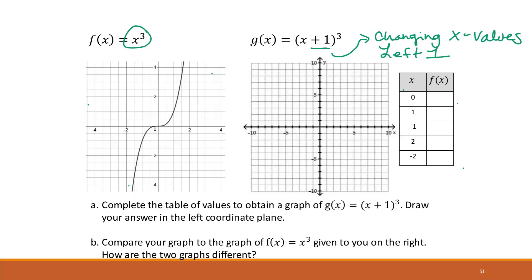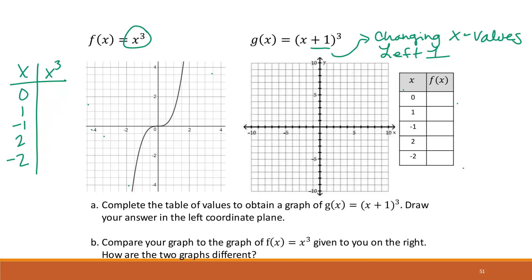So if we look at the points for the original parent function — the cubic function — we have (0,0), (1,1), (-1,-1), (2,8), and (-2,-8). I want to show you how to apply it to the x values, so I'll create a different table. If we want x and (x+1)³ as our y values, the y values from the original table stay the same: 0, 1, -1, 8, and -8. But I am making a change to the x values — moving left 1 — so I'm subtracting 1 from each x value.